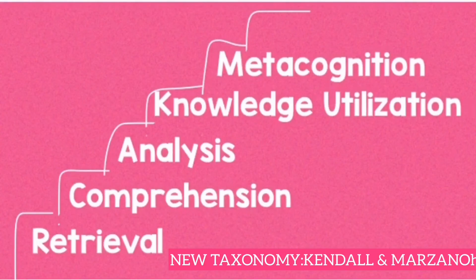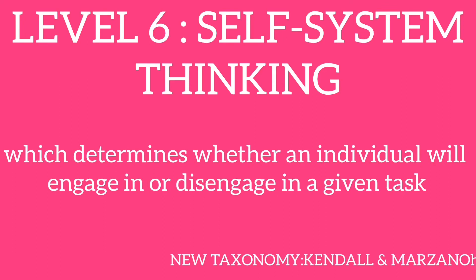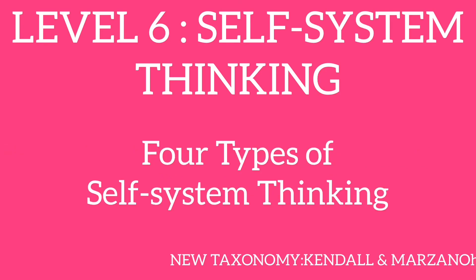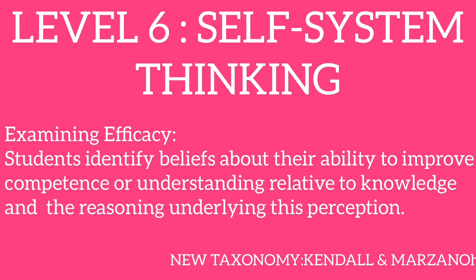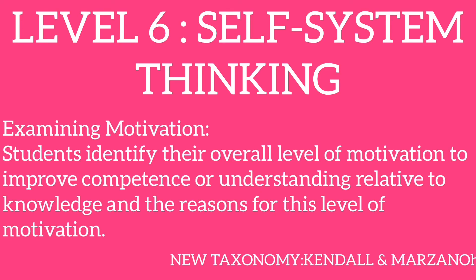The highest level of the New Taxonomy is self-system thinking. It consists of an interrelated arrangement of attitudes, beliefs, and emotions which determines whether an individual will engage in or disengage from a given task, and how much energy the individual will bring to the task. There are four types: examining importance, where students identify how important the knowledge is to them; examining efficacy, where students identify beliefs about their ability to improve competence or understanding; examining emotional responses, where students identify emotional responses to knowledge and the reasons for these responses; and examining motivation, where students identify their overall level of motivation to improve competence or understanding relative to knowledge.